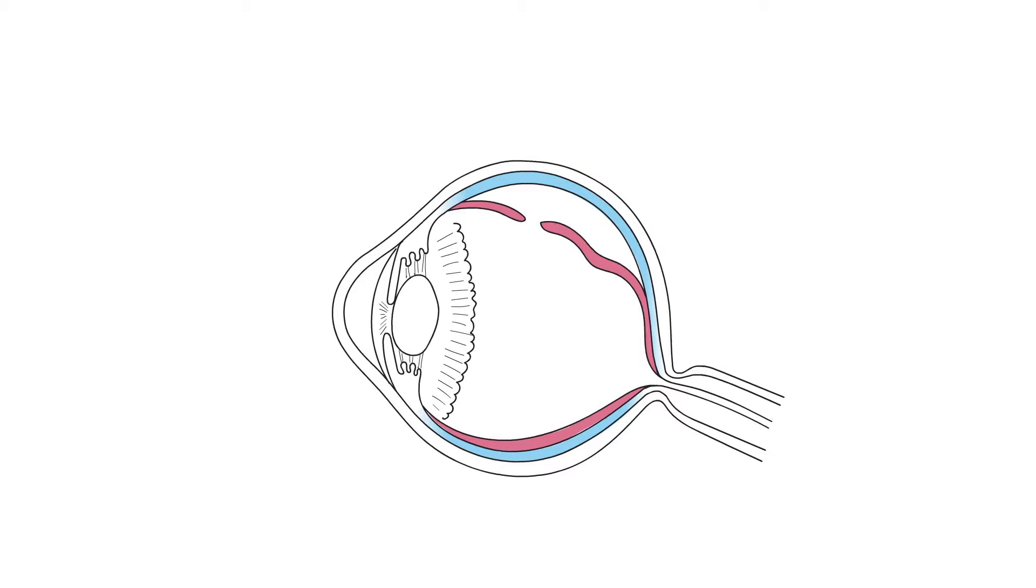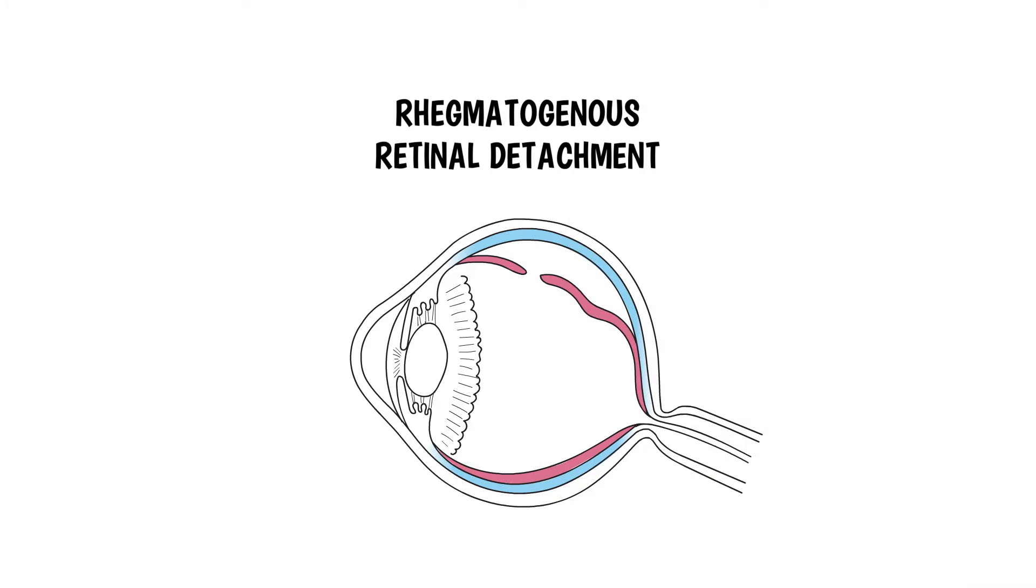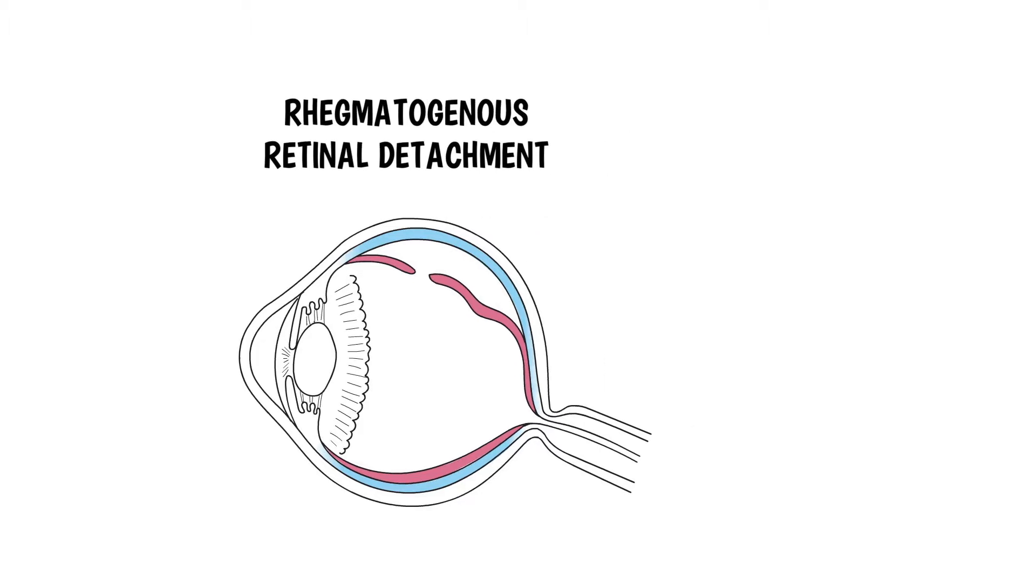The most common type of retinal detachment is referred to as a rhegmatogenous retinal detachment. It occurs when a tear develops in the retina, usually due to an abnormal area of adhesion and traction between the vitreous inside the eye and the retina.